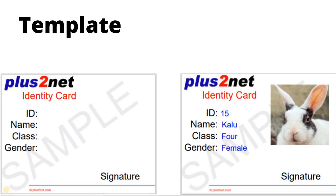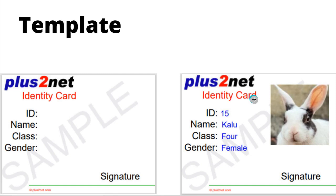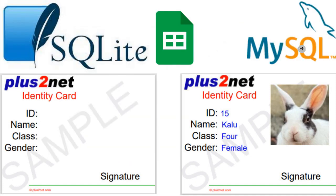Hi friends, we will create identity cards or ID cards in PDF using ReportLab. We will use a blank template and add data to it, including images. Next, we'll see how to take data from a Tkinter window with names, IDs, and an image picked from the local system. We can also take data from SQLite or MySQL and dynamically create multiple ID cards in bulk. We will learn all about this.